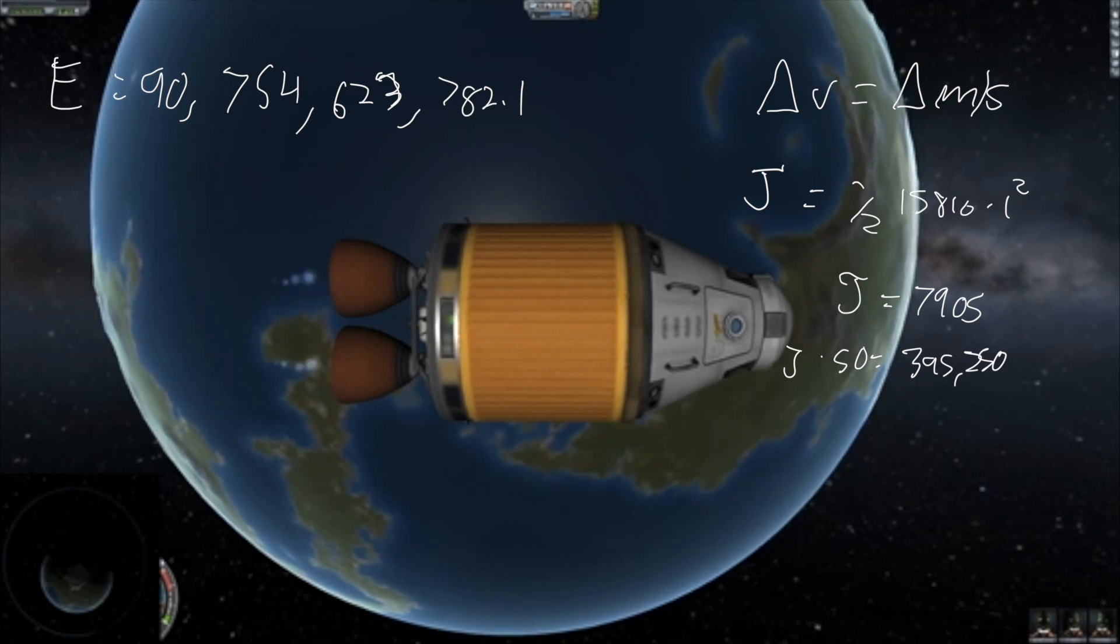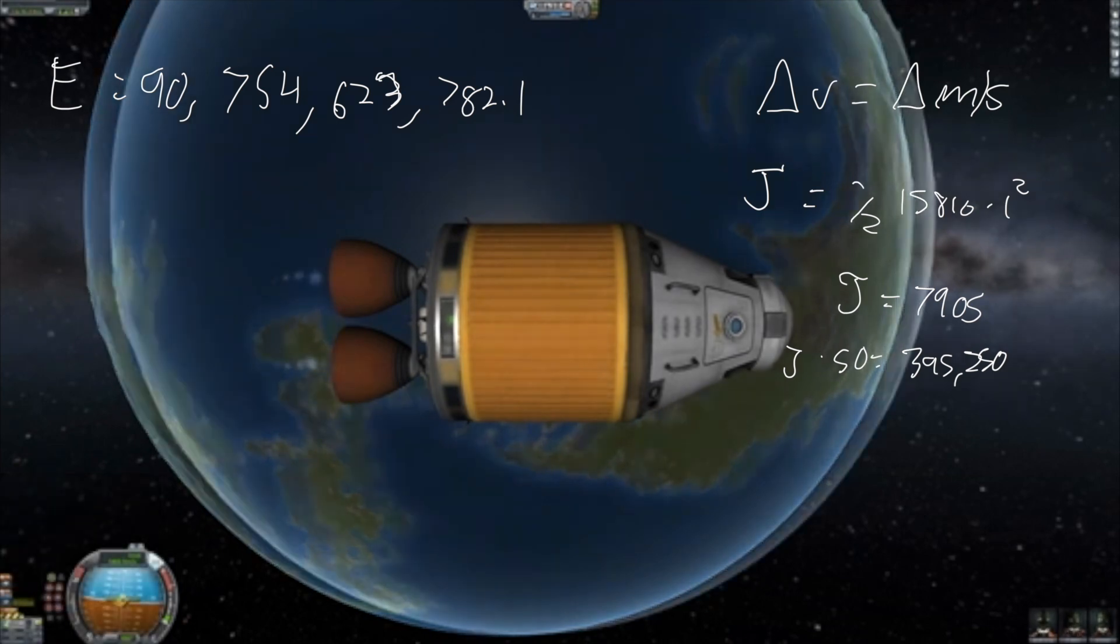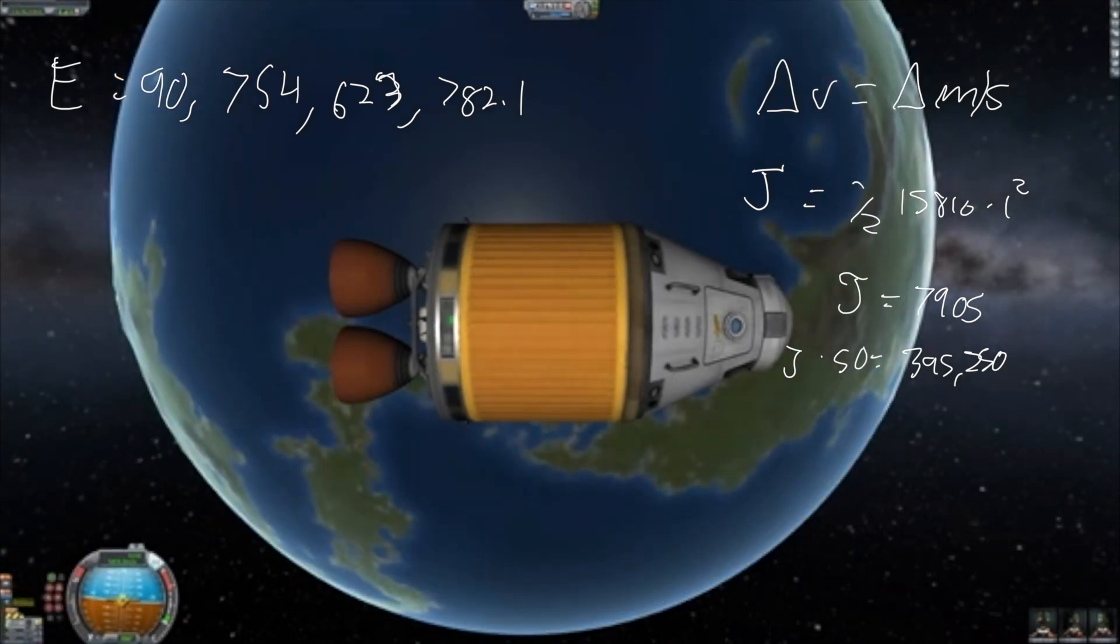I'll do a burn that's as close as possible to 50 delta v and see how close I get. I ended up gaining 49.8 meters per second, pretty close. So in reality I gained 393,669 joules.